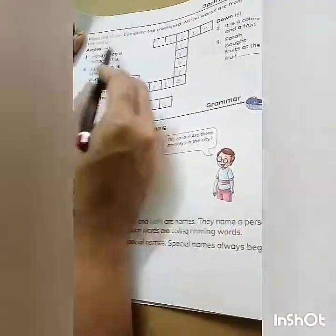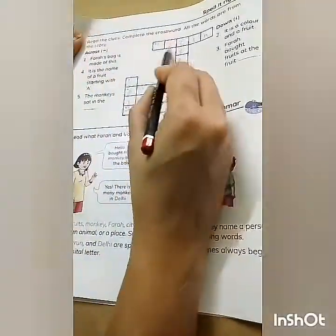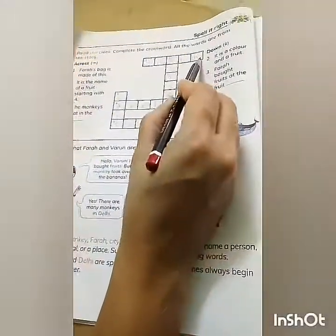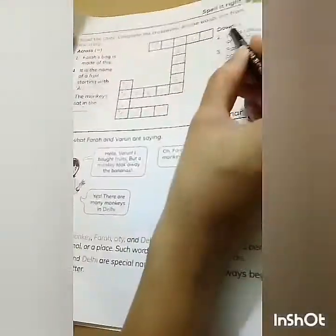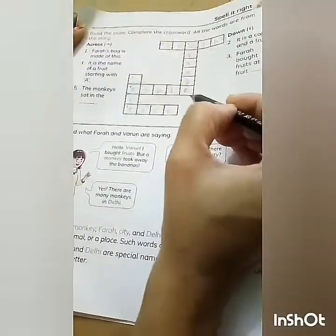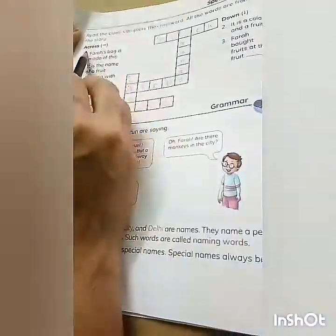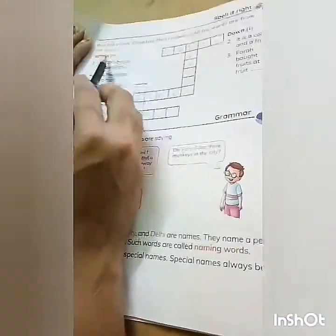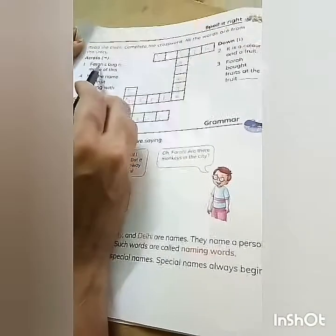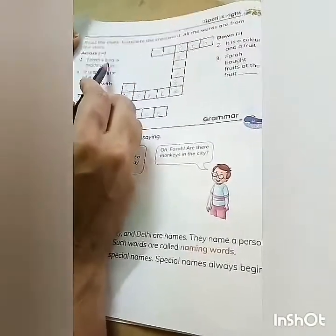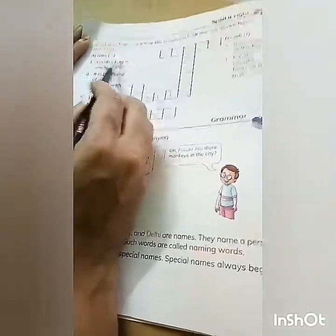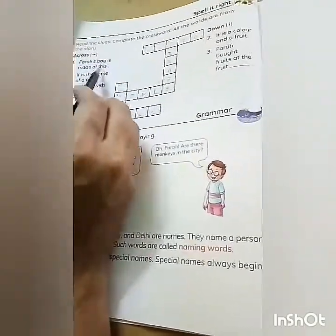See here — across. Across means you have to write in this way. Down means you have to write in this way. First we will see across. First one: Farah's bag is made of this.